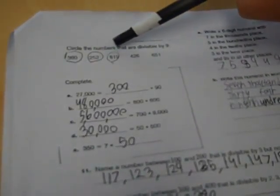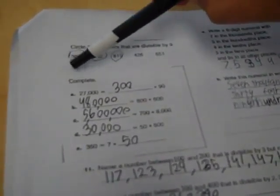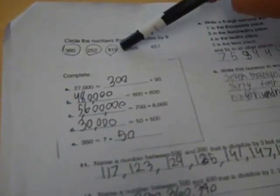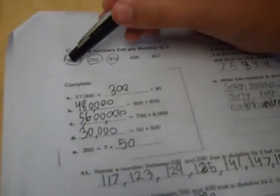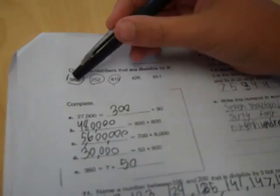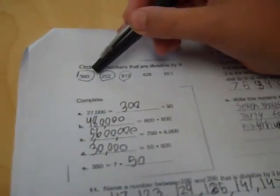Question number one says circle the numbers that are divisible by 9. The reason I know these three numbers are divisible by 9 is because if you add up 3 plus 6 equals 9, which means it will be divisible by 9.